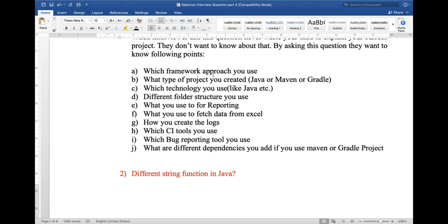First, which framework approach you use. Second, what type of project you created - Java project, Maven project, or Gradle project. Third, which technology you use like Java, PHP, C#, etc. Next, different folder structure you use, what you use for reporting, what you use to fetch data from Excel files, and which APIs you use.